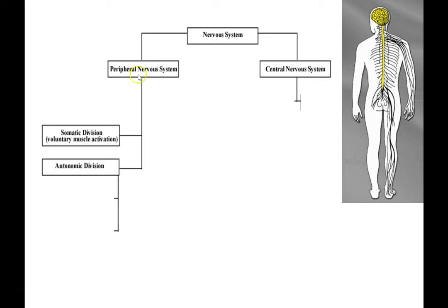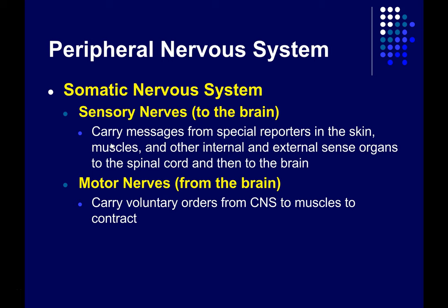We can divide the peripheral nervous system into the somatic division and the autonomic division. The somatic division is important for voluntary muscle activity and conscious perception of the body. It consists of sensory nerves carrying messages from receptors in the skin, muscles, and other sense organs up to the spinal cord and brain, as well as motor nerves — axons from the brain and spinal cord out to the muscles and glands, telling the muscles to contract and the glands to produce hormones.